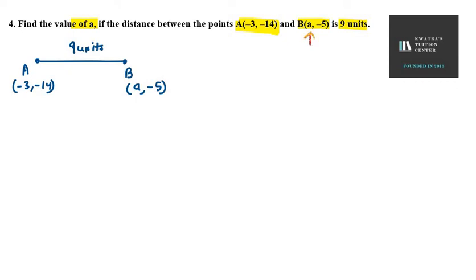So let's use the distance formula here. AB, we know here. We apply the distance formula. That is (x2 - x1) whole square. That is 9 minus (-3) whole square plus (-5) minus (-14) whole square.